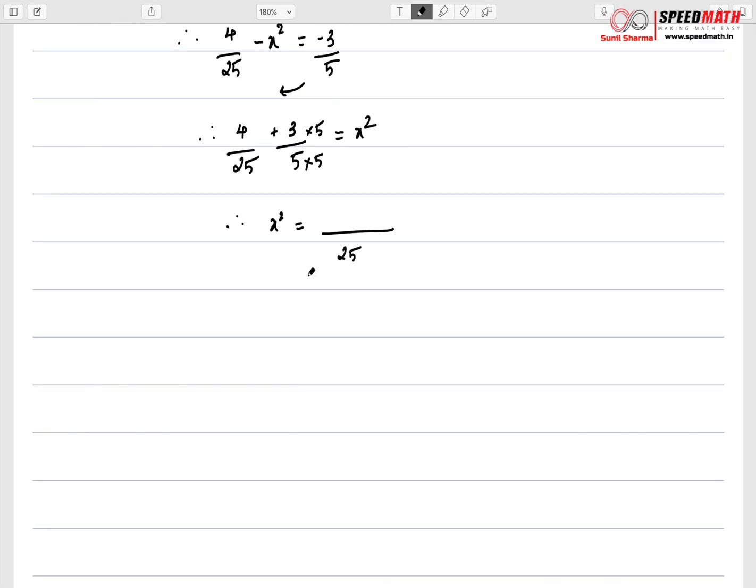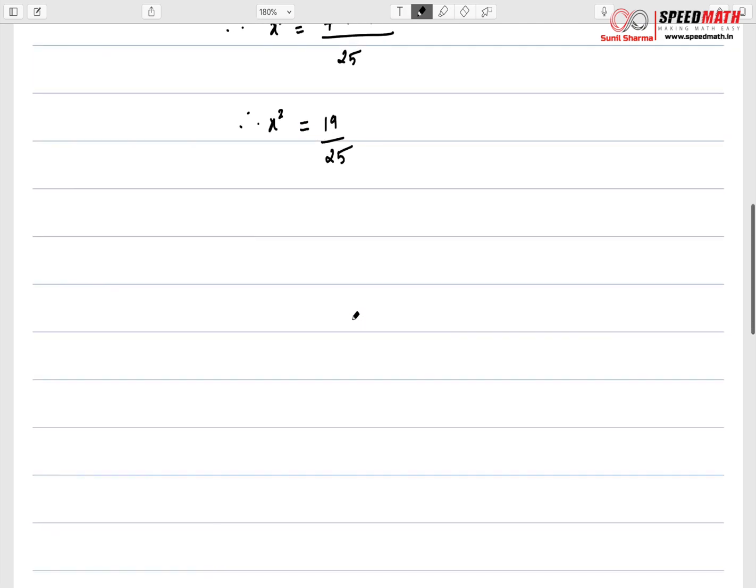So we get here is 4 plus 15. So therefore, x² would be 19/25. Just take positive square root very quickly. So we have here x = √19. 19 is not a perfect square and 25 is a perfect square. The square root is 5.